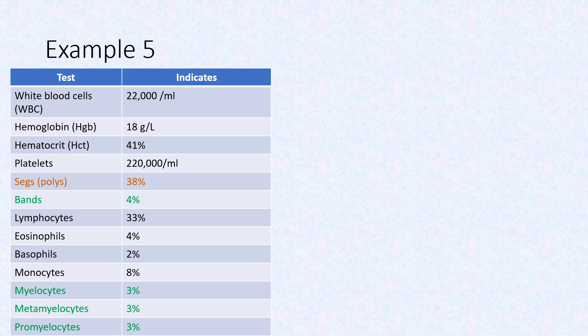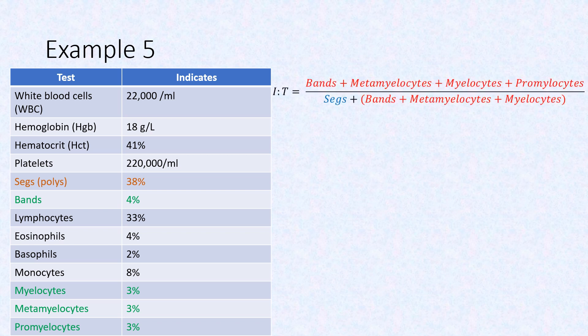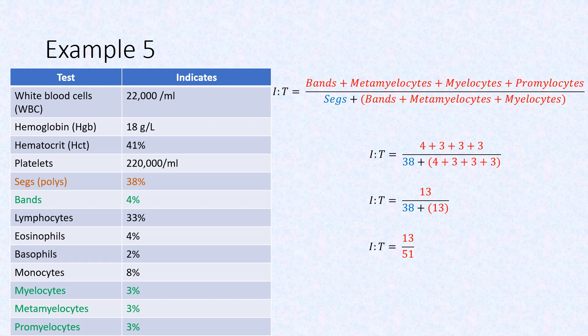Calculate the IT ratio for example 5. Recall the formula: immature neutrophils divided by total neutrophils. From the CBC, we need the SEGS and the immature neutrophils — bands, myelocytes, metamyelocytes, and promyelocytes. The total percentage of immature neutrophils is 13 and the total number of neutrophils is 51. Dividing these gives an IT ratio of 0.25.